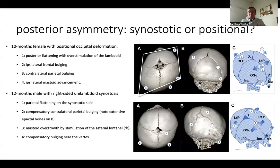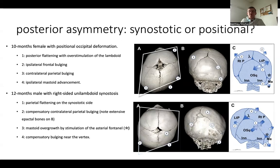On the contrary, here you have a baby with a uni-lambdoid synostosis. You see there is a flattening, but it is caused by hypodevelopment of the region, with the coronal suture held backward and the ear typically held backward and lower than on the non-synostotic side. The skull has a typical trapezoidal shape, opposed to the parallelepipedic shape in the deformation. So we have a comparison between an inactive versus an overstimulated suture.